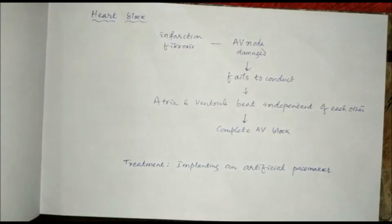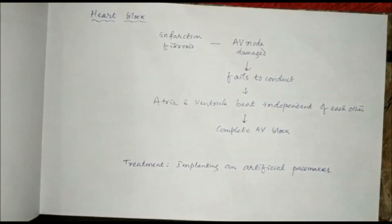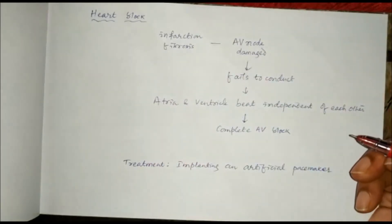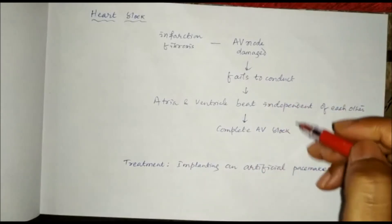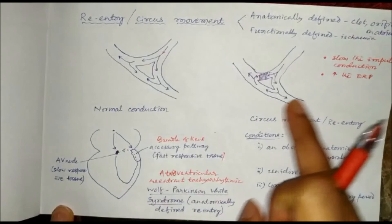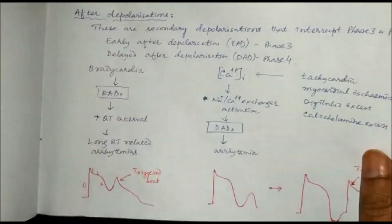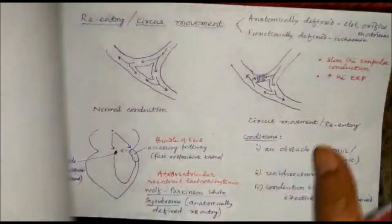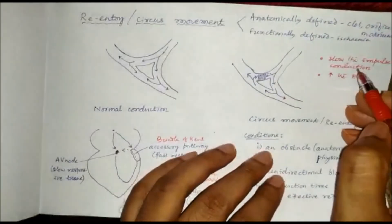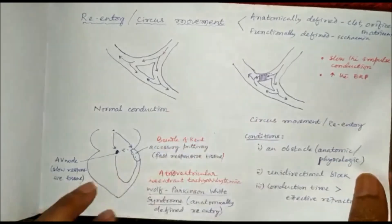Heart block can also cause arrhythmia. If the AV node is damaged due to infarction or fibrosis, it fails to conduct, and atria and ventricle beat independent of each other, resulting in complete AV node block. For this we can treat it by using an artificial pacemaker in place of the AV node. For re-entrant arrhythmia, treatment is to slow the impulse conduction or increase the effective refractory period. For ectopic pacemaker, early after depolarizations and delayed after depolarizations, we use channel blockers — sodium channel blockers, calcium channel blockers, or potassium channel blockers.